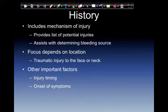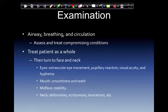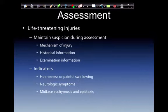History includes mechanism of injury, provides a list of potential injuries, and assists with determining the bleeding source. Focus depends on the location of traumatic injury to the face or neck, any associated symptoms, and the timing of the injury. On examination, focus on the ABCs — airway, breathing, and circulation — assess and treat compromising conditions, and treat the patient as a whole before turning to the face and neck. Assess the eyes for extraocular movement, pupillary reaction, visual acuity, and hyphema. Check the mouth for smoothness of teeth and mid-face stability. Evaluate neck deformities, ecchymosis, or lacerations, and assess any other body system involvement.